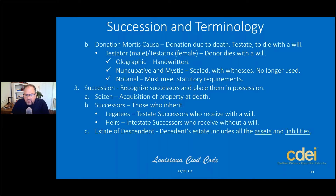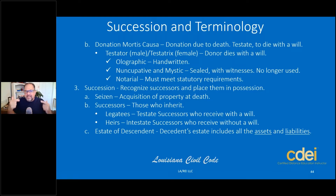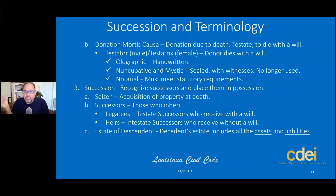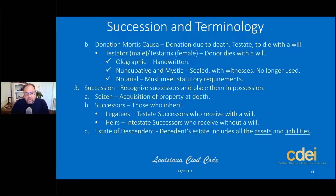The estate of the descendant includes both the asset column and the liability column. Whether someone dies testate or intestate, the entire estate — assets and liabilities — passes to the successors, whether they are legatees with a will or heirs without one. So successors get the assets, but they also receive any debts with it. That's called the estate of the descendant.